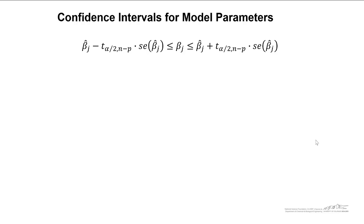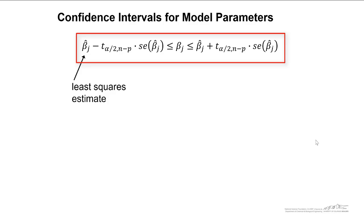To compute confidence intervals on the model parameters, we can use this equation. Our confidence interval is centered around the least squares estimate, beta hat j. Again, we get that standard error from the diagonal element of our covariance matrix. So this is how we can compute the confidence interval for model parameters.